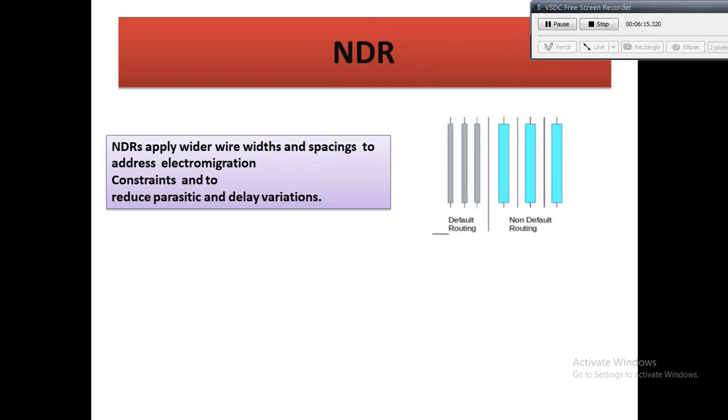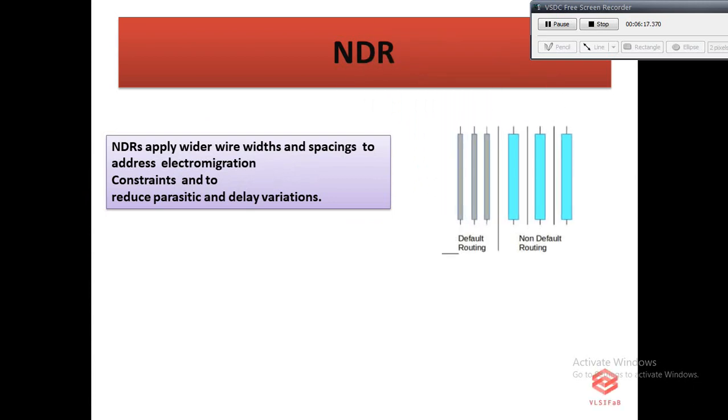Non-default rule (NDR): this is a routing rule that is not the default. It usually consists of double-wide or triple-wide metal and at least double-wide spacing, but it can be whatever you like as long as it follows DRC rules.